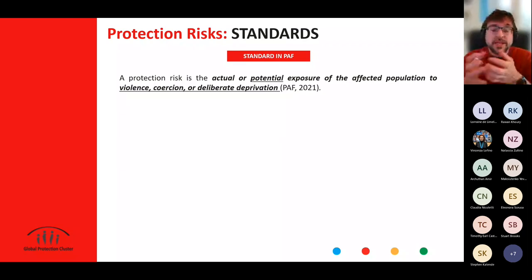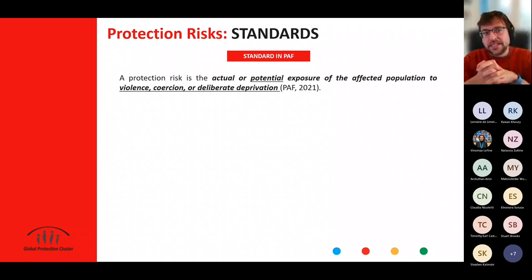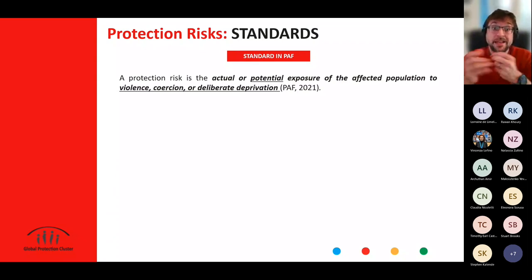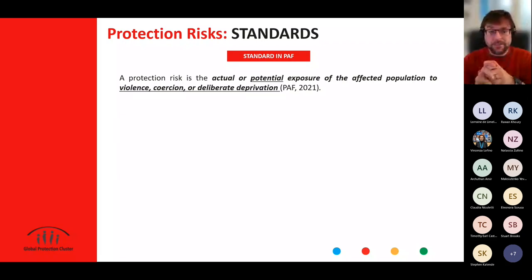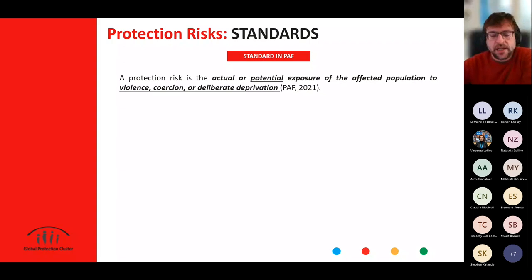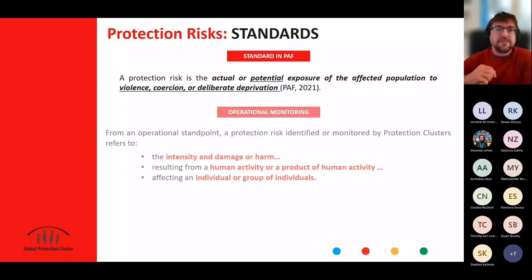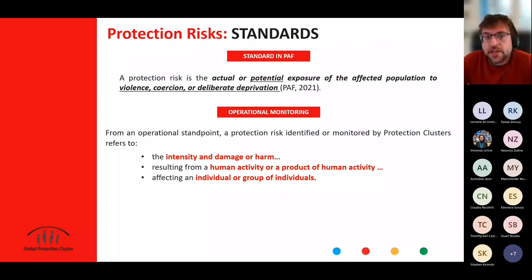Externally, we have been challenged as a sector to clarify better what we mean when we identify protection risks. The second element is the concept of violence, coercion, and deliberate deprivation — very broad concepts that are difficult to translate into data, information, or a standard approach to actually showcase and present them. So what we propose with the definitions and the whole work around PAUs is to have an operational approach — not to change the definition, but to look at the monitoring of protection risk from an operational standpoint, focusing on the actual protection risk.